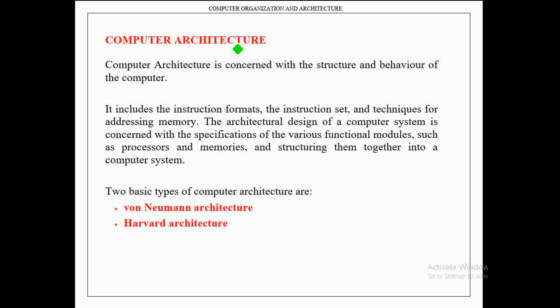The next important definition is computer architecture. Computer architecture is concerned with the structure and behavior of the computer. It includes instruction formats, the instruction set, and techniques for addressing memory. The architectural design of a computer system is concerned with the specification of various functional modules such as processors and memories, and structuring them together into a computer system.